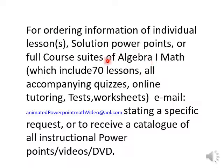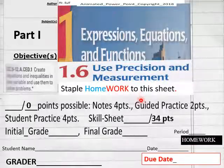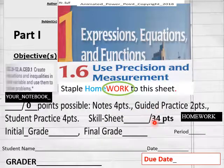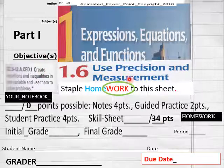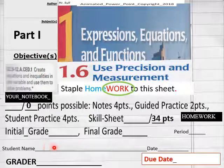Hello everybody, getting ready to do lesson 1.6 part 1 homework for Algebra 1 math. On today's homework assignment you got 34 points. Have that out ready to go students. Using precision and measurement, put your name, date, period.